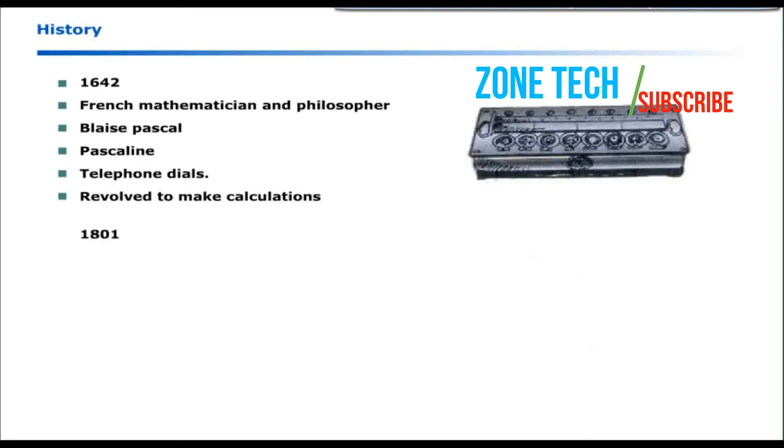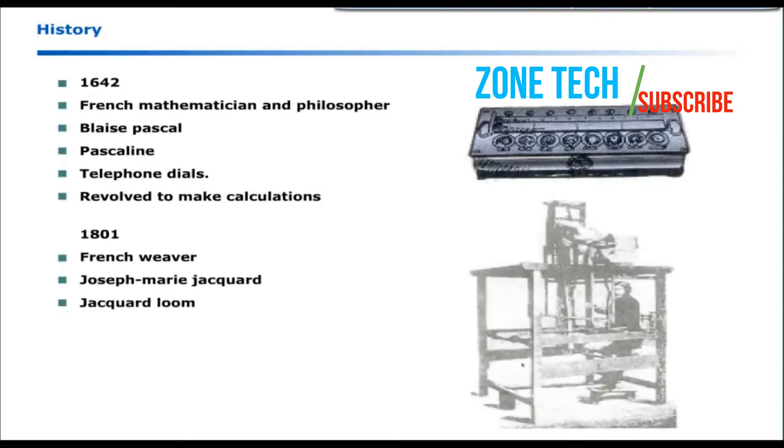In 1801, a French weaver named Joseph Marie Jacquard created Jacquard loom. Punched cards were used to direct the movement of needles, thread and fabric to create different patterns in a fabric on a loom known as Jacquard weaves.